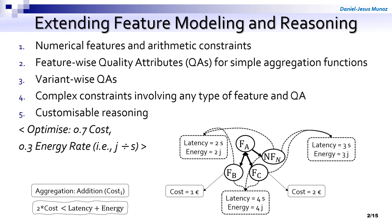The addition of latency and energy must be greater than two times the cost of the product. And finally, we can find very advanced optimization goals. For example, there we have a first ad-weighted multi-objective optimization: 70% will be the cost to optimize, and 30% of the importance will be the energy rate. The energy rate is in watts, calculated by dividing the energy quality attribute by the latency quality attribute.